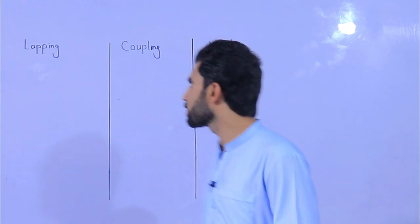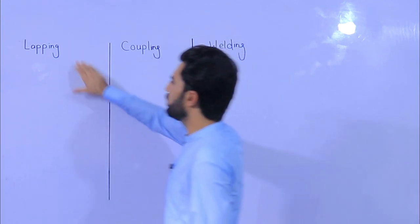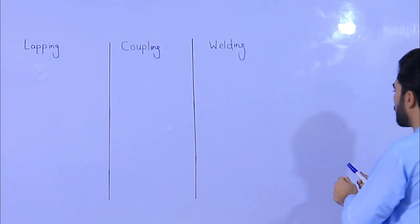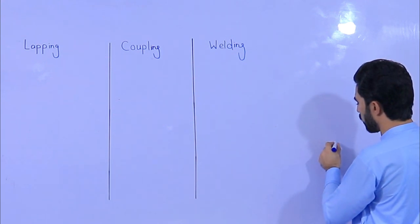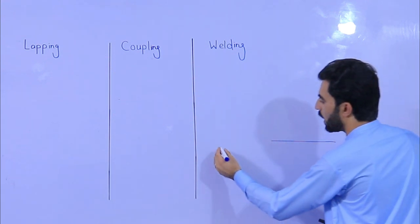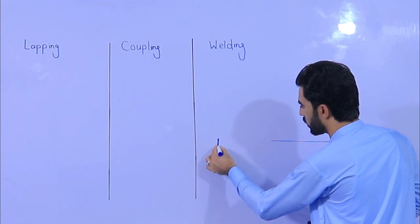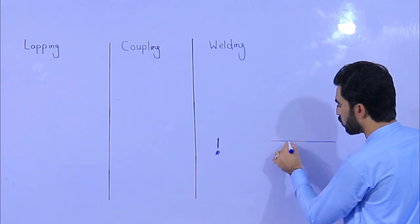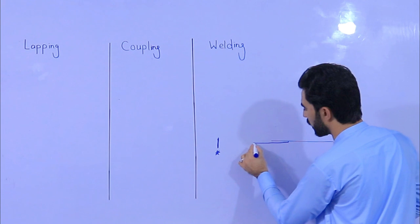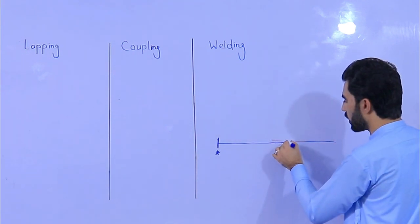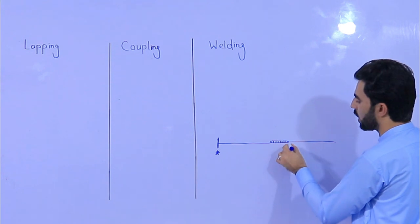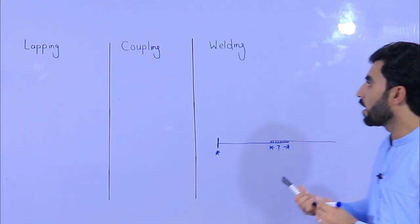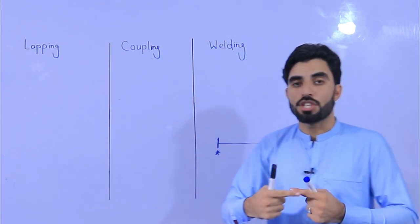Many students know about lapping length. We provide lapping like this: we have one steel bar, and if we need the length of steel from one point to another, we overlap one steel bar to another and we can get that length. This length is called lapping length.